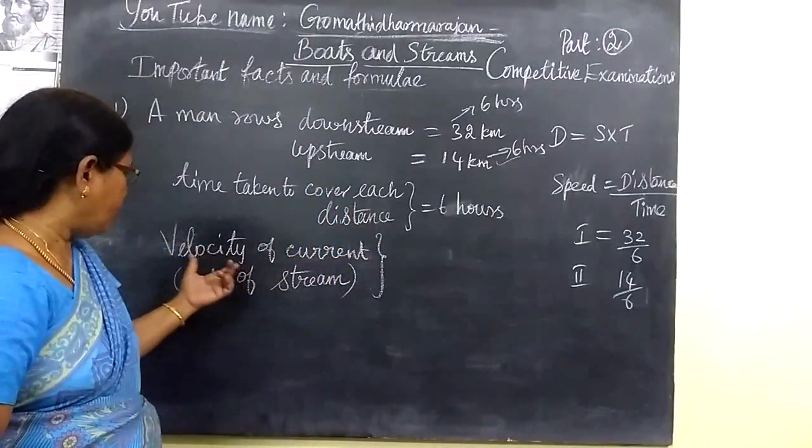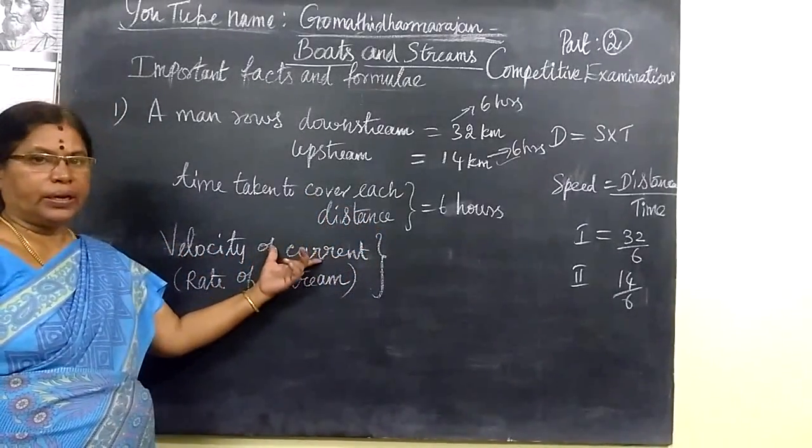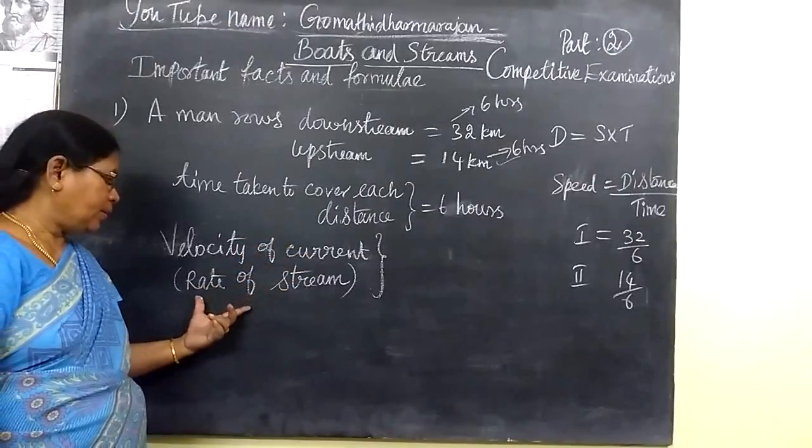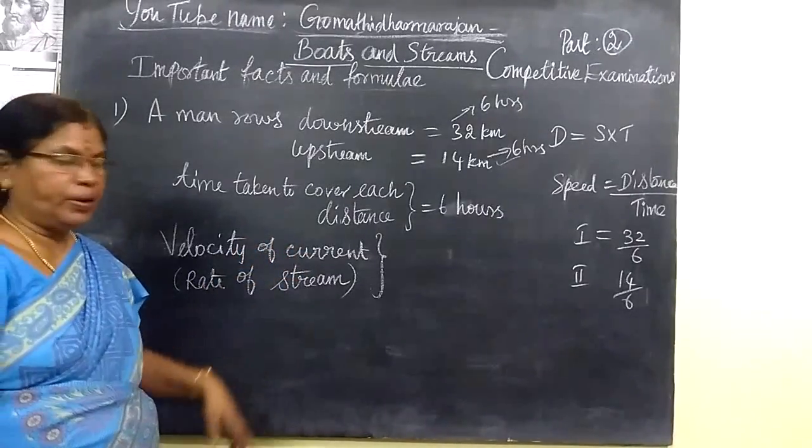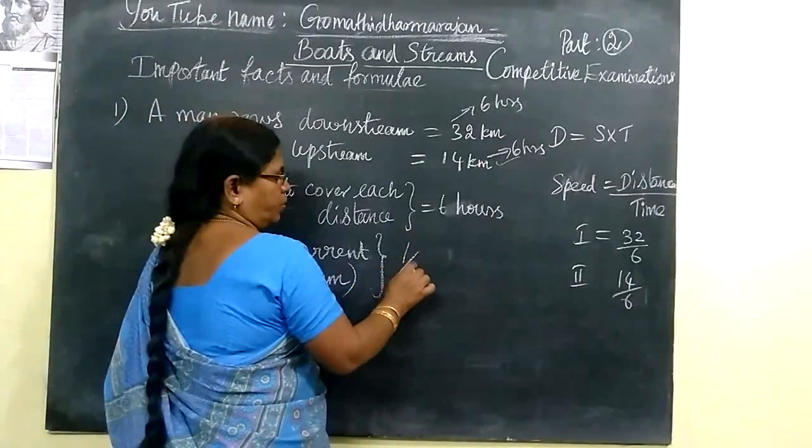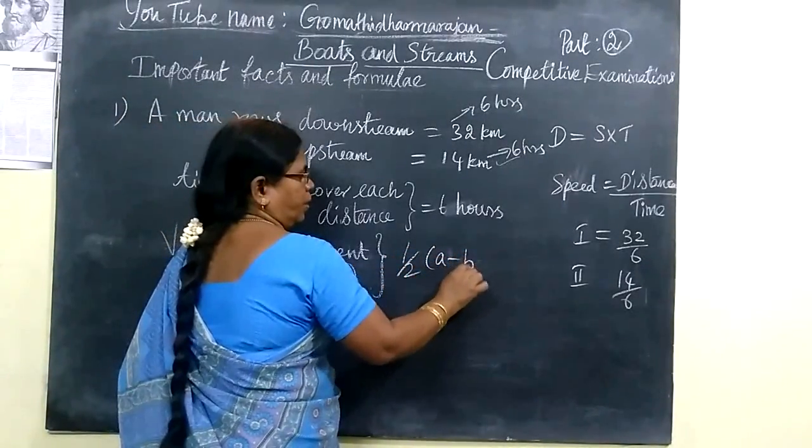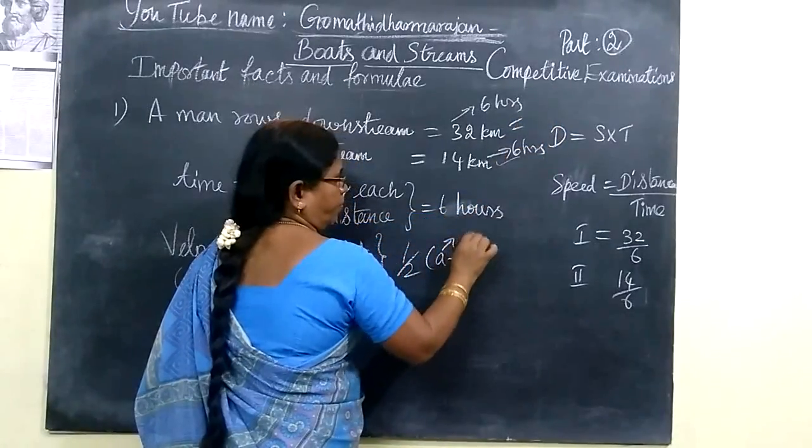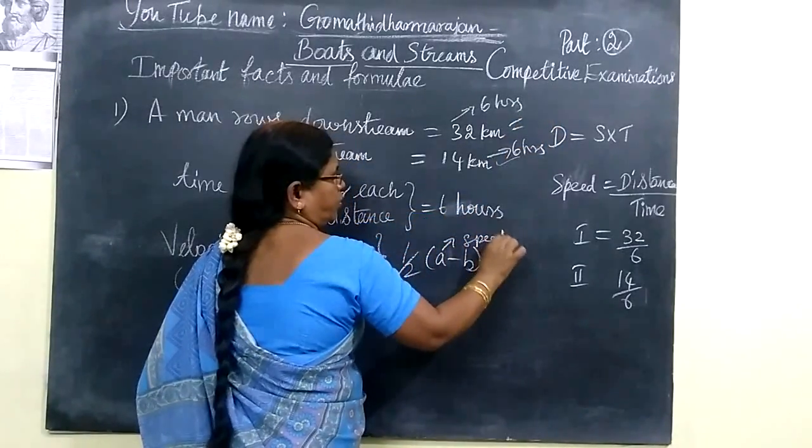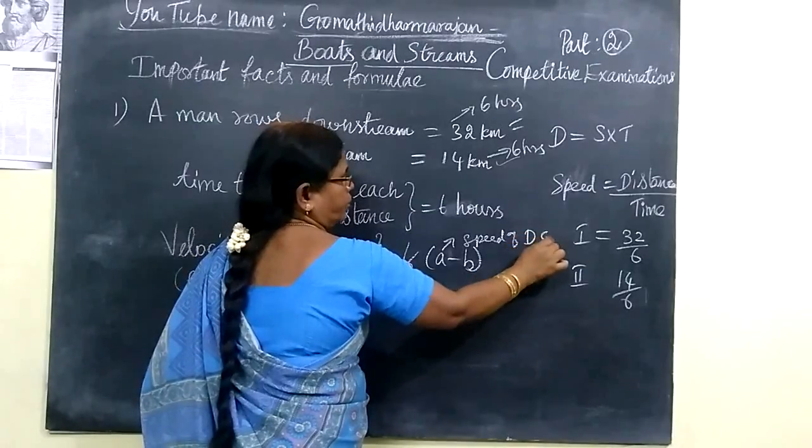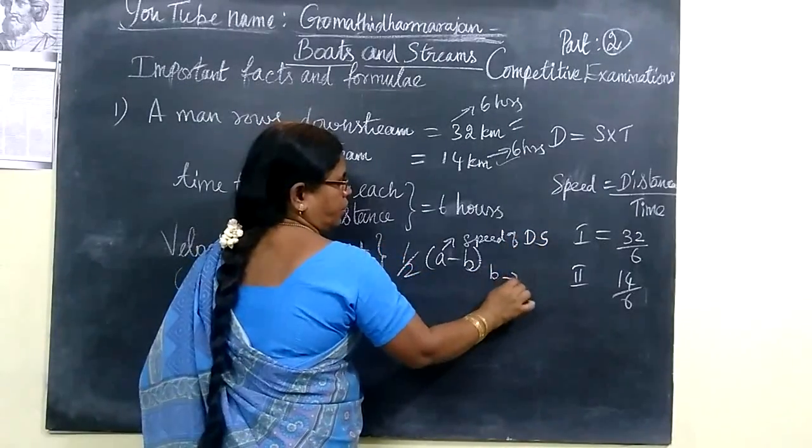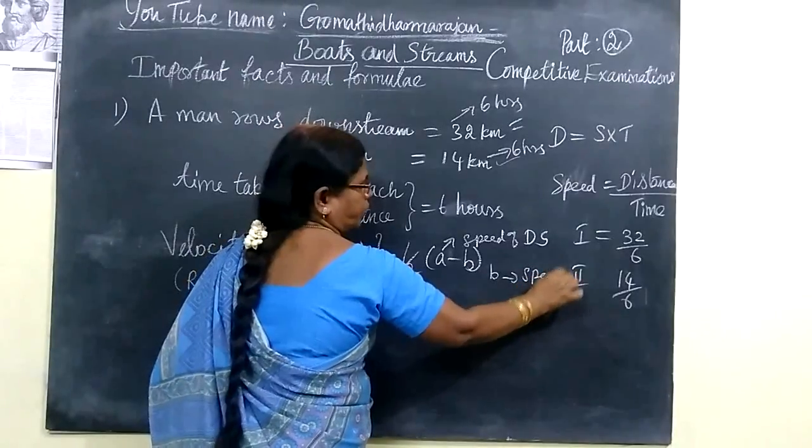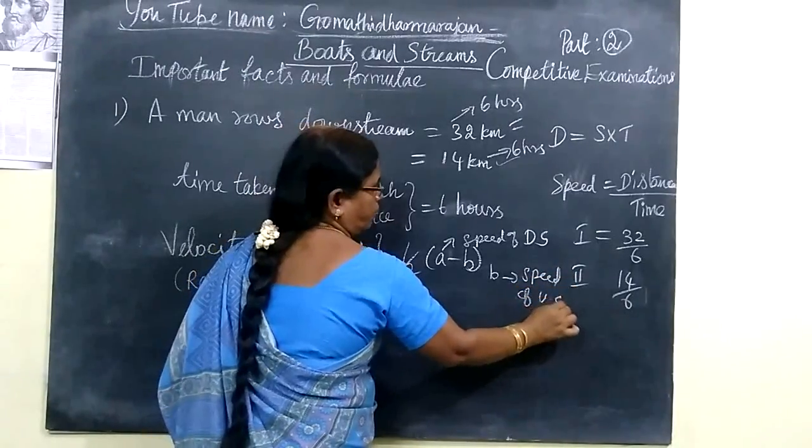So first you have to find velocity of the current. This is nothing but the rate of stream. Half bracket, A minus V. A is speed of downstream, then V is speed of upstream.